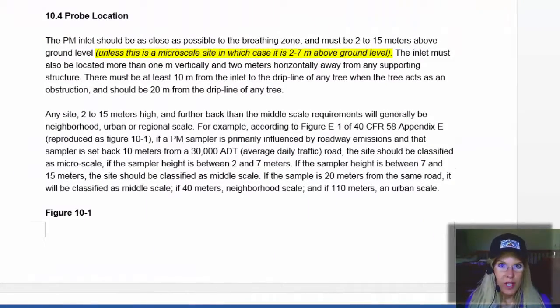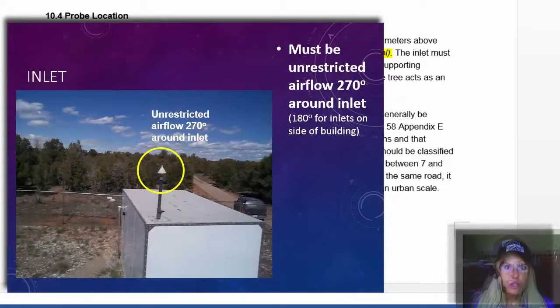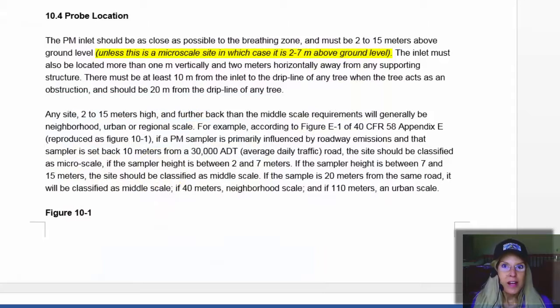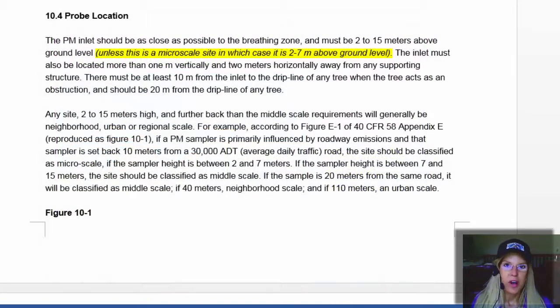So now we have to talk about probe location. So that means that the actual inlet of your air sampler is not too close to like an exit flue of any sort of incinerator, any sort of boiler. It's not too close to even a parking lot, for example, where cars could idle. It's not too close to the ground. So let's look up what the requirements are there.